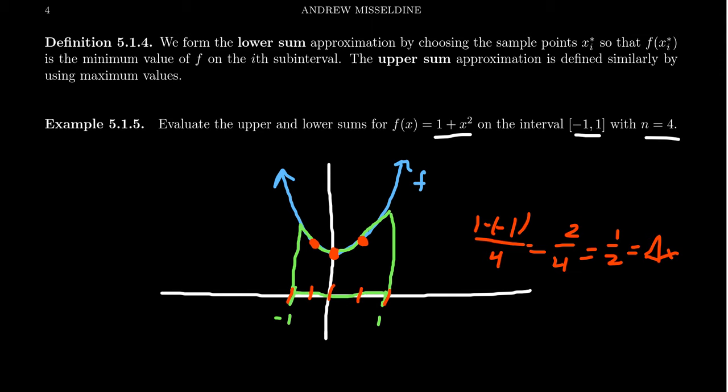And then you'll choose the minimum of the fourth interval to be that point right there. So you're always choosing this minimal thing here. So for this lower sum, you end up with one-half times f of negative 0.5, plus f of 0, plus f of 0. It actually shows up twice because it's the minimum twice. And then you get f of 0.5. So this would give you that lower sum, and that's an option one could choose.